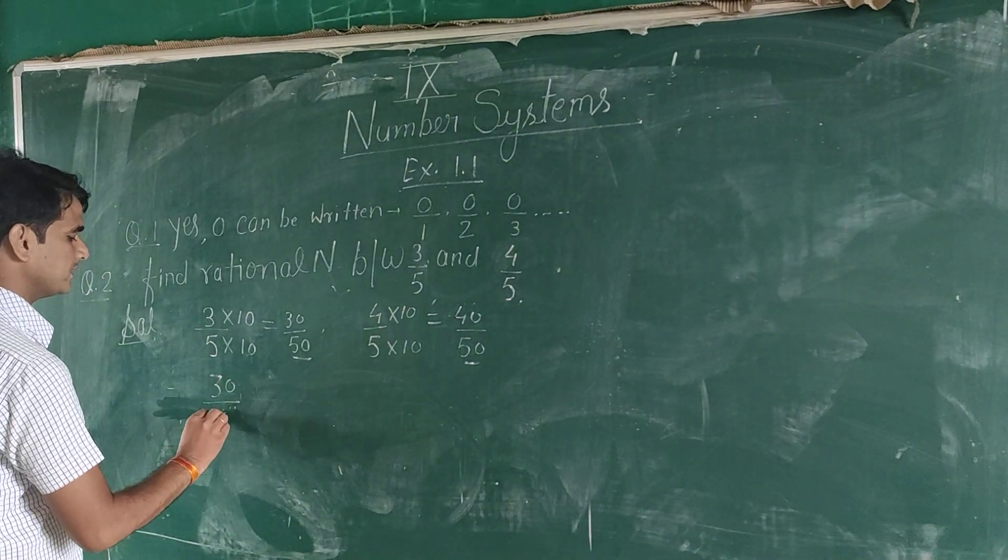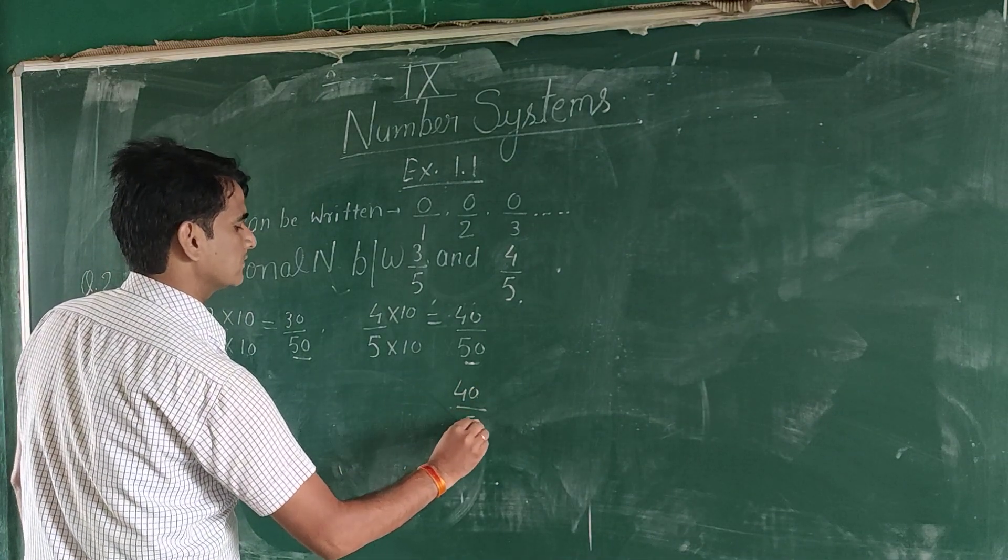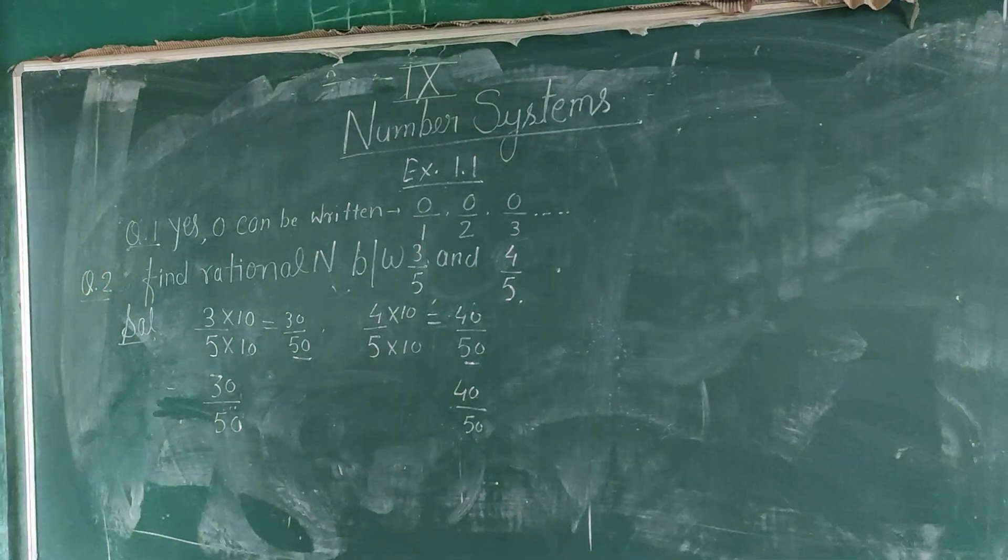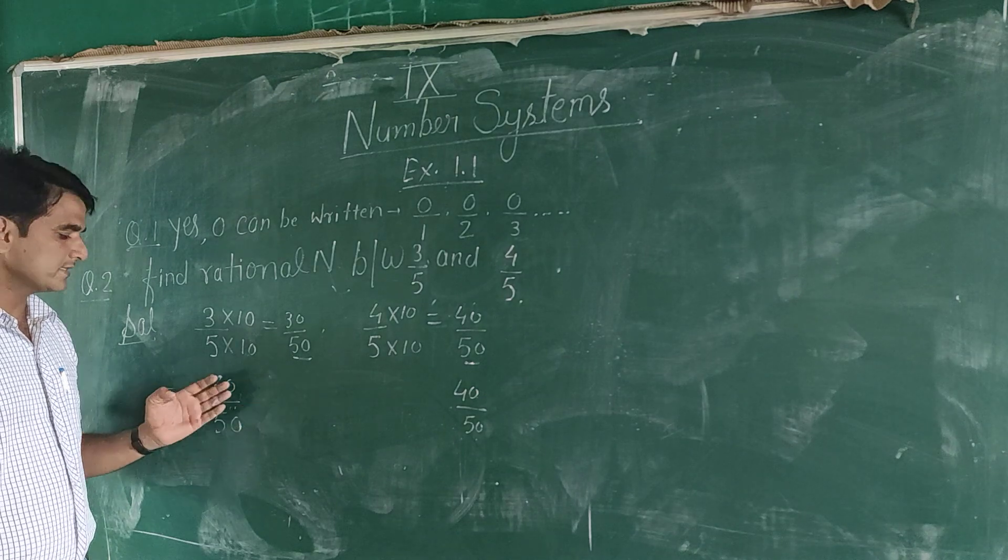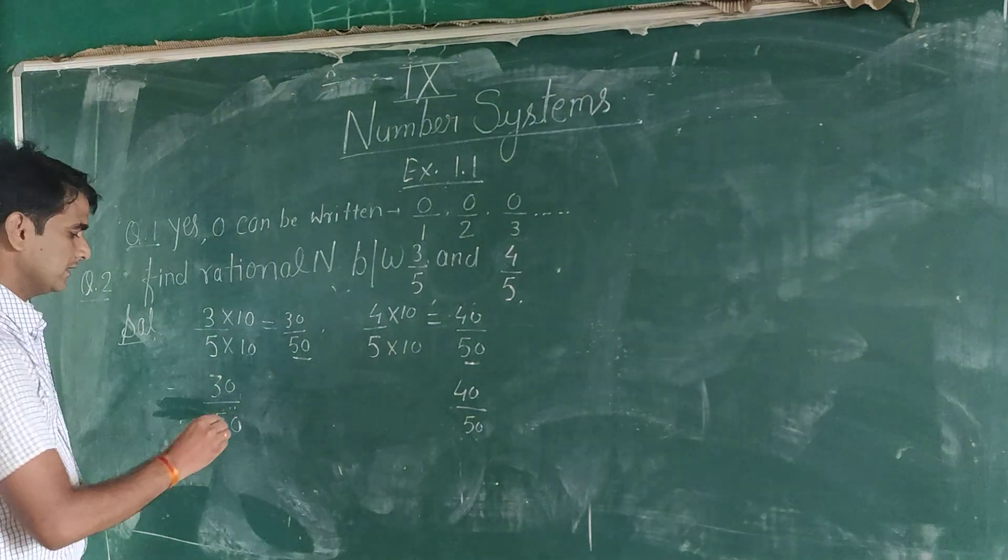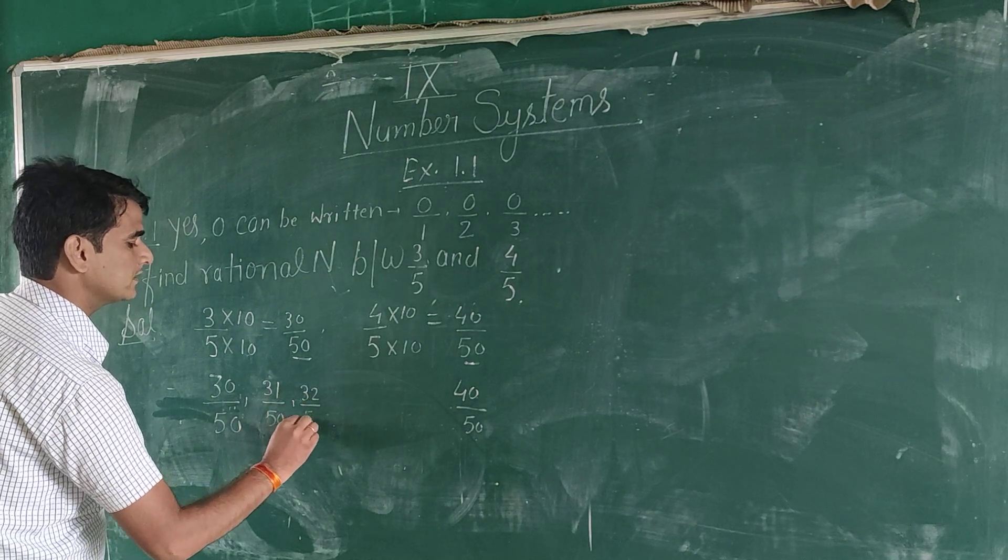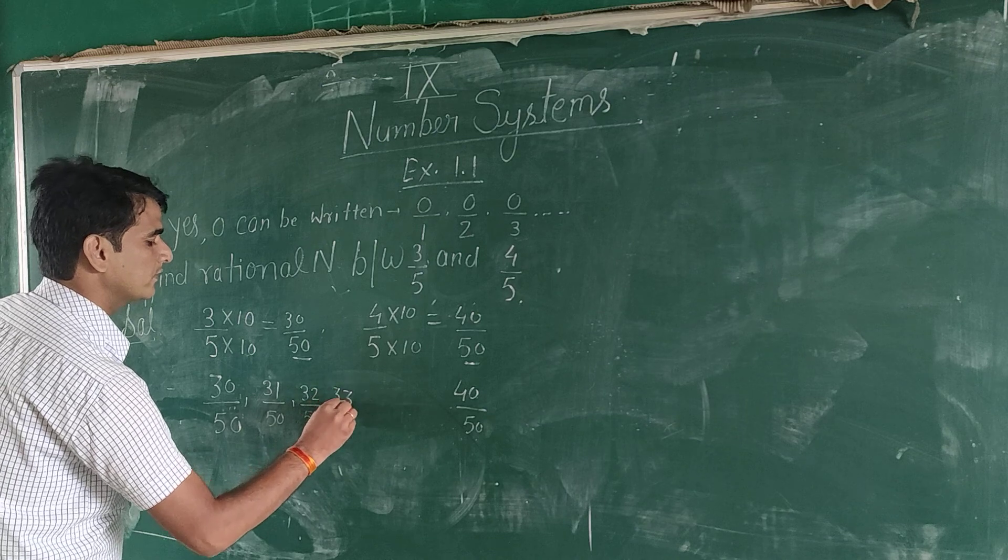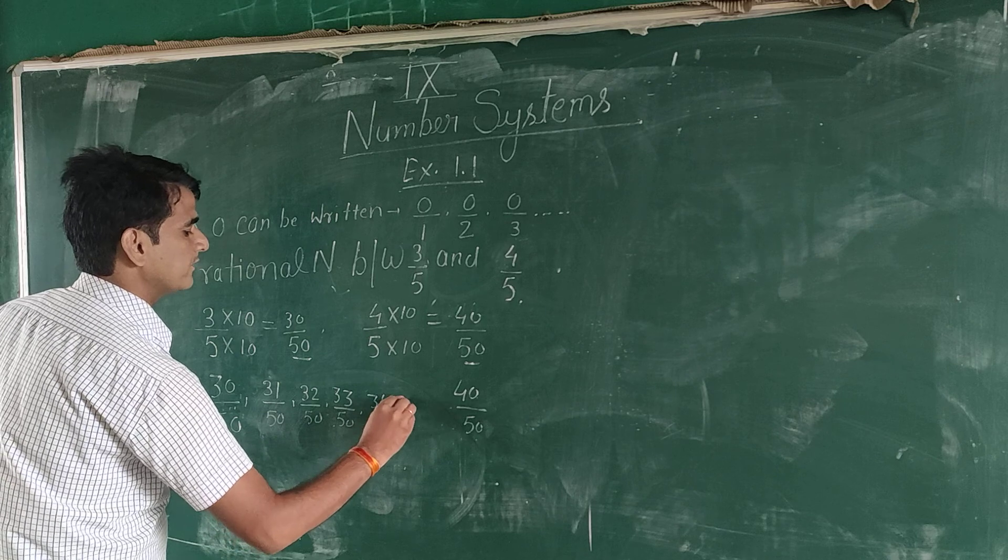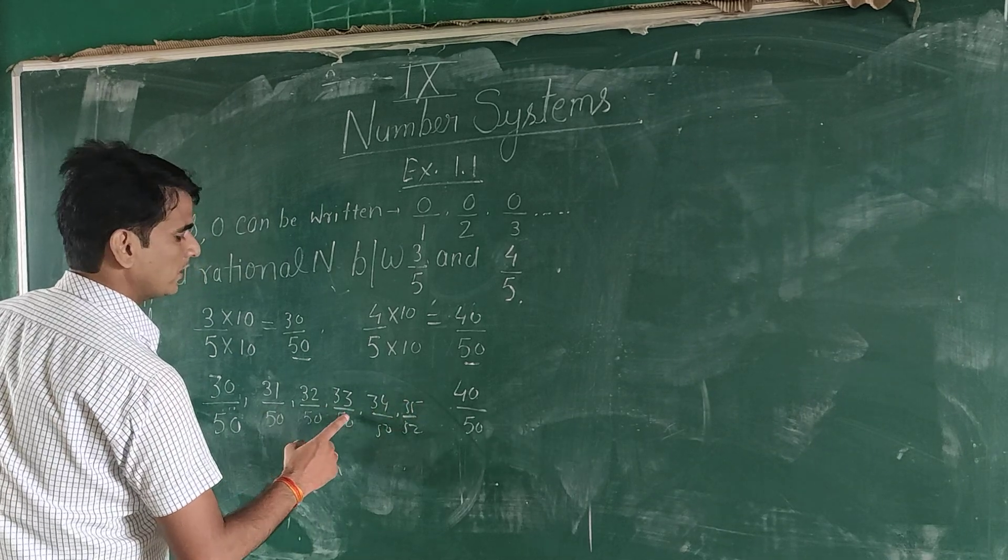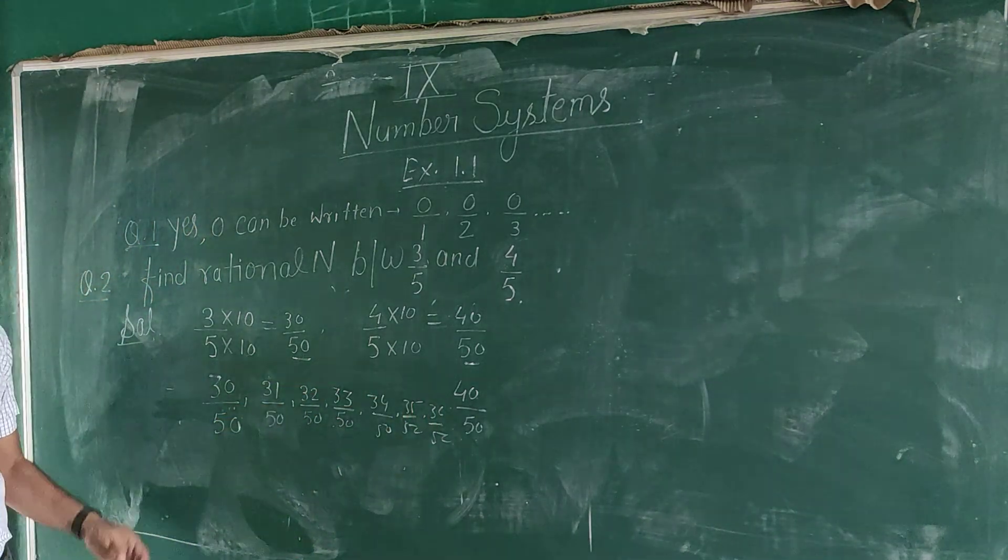So, one way you can do it: 30 upon 50 on one side, 40 upon 50 on the other side. You can do it in sequence. Sequence is: 31 upon 50, 32 upon 50, 33 upon 50, 34 upon 50, 35 upon 50, 36 upon 50. And other numbers can be multiplied by 10.